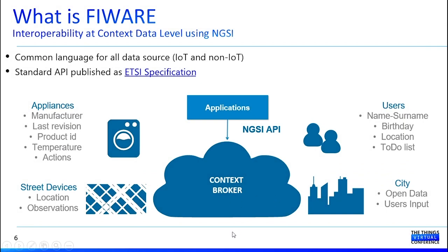You can integrate different types of data: data coming from a city, from open data portals or sensors spread in the city. You can integrate data from users, from their mobile phones or any type of application. You can integrate information from devices in the streets for location, even from earth observation. And you can integrate any type of appliance in your smart home or devices in an industrial chain. All this data is pushed into the Context Broker once it is converted into NGSI, and can be used by any type of application or added-value service.